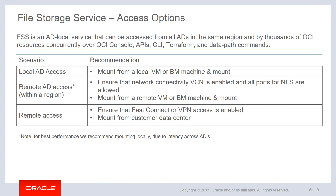FSS is an availability domain-specific construct. When we provision a file system, we select the availability domain. When we create the mount target, we also select a subnet. We define through security lists and route tables which resources have access to that mount target. Within an availability domain, it's simply a matter of allowing access between subnets. From a remote availability domain within the same region, we need security lists to allow access from one AD to another. It's also possible to establish remote connectivity — if we have remote peering between two different OCI regions, or if the customer has connected their on-premises infrastructure using FastConnect or VPN, it's possible to expose that FSS mount target to the customer's on-premises network.